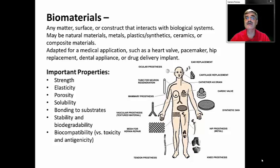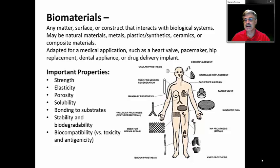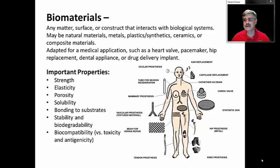A drawing of a person with many replaced parts shows a variety of ways in which biomaterials have been used or can potentially be used to replace body parts. In the area of biomaterials, the important topics include the strength of the material, its elasticity, porosity, solubility, whether or not it will bond to the biological substrate — that is, will it hold where we want it to graft — biodegradability, and very importantly, biocompatibility. We don't want our bodies to form antigens against the material and reject it.